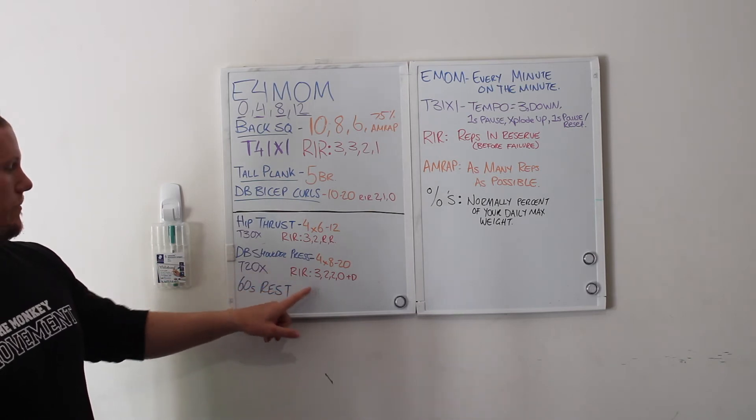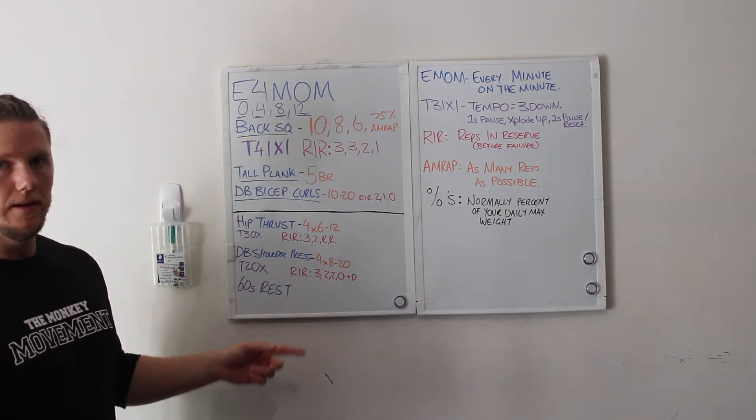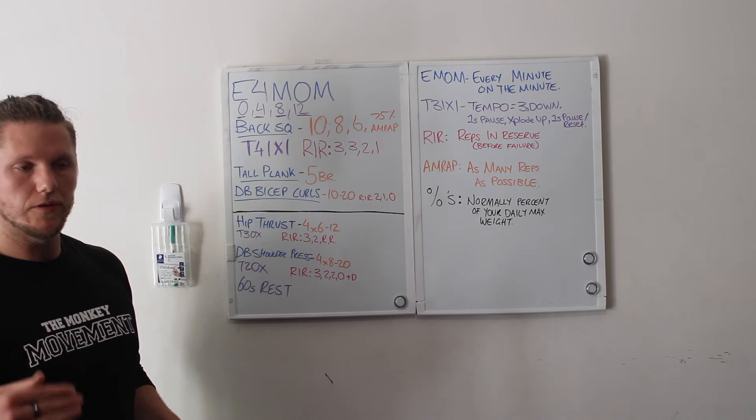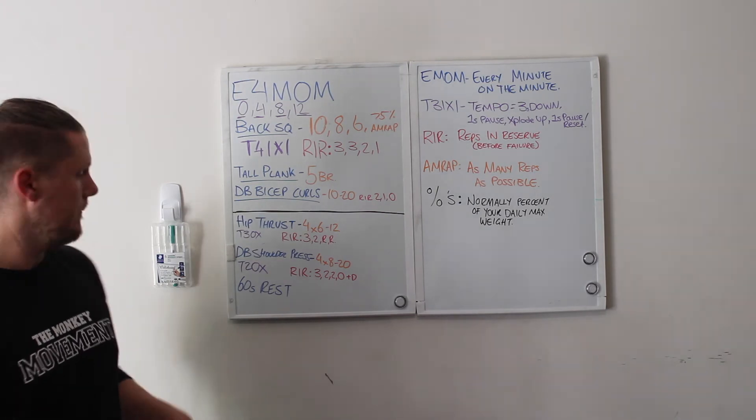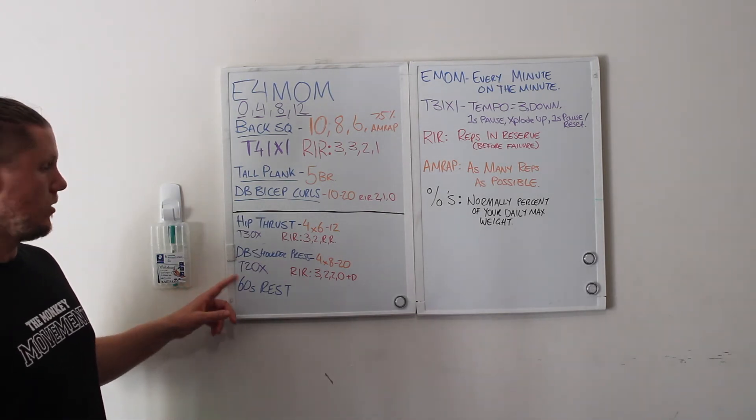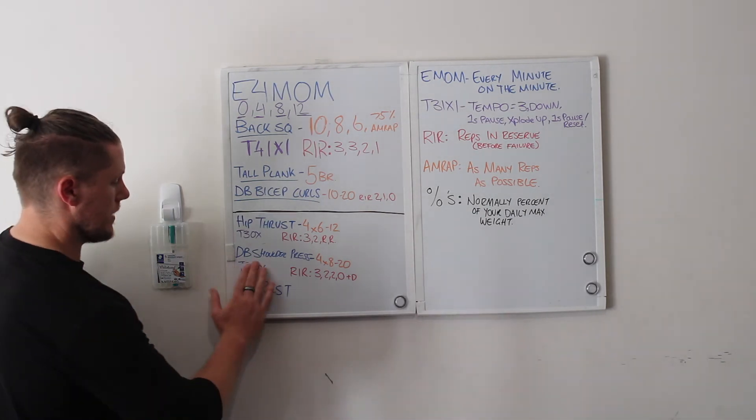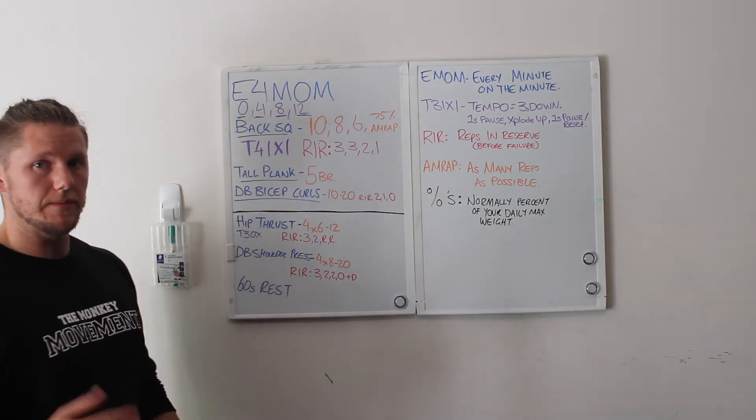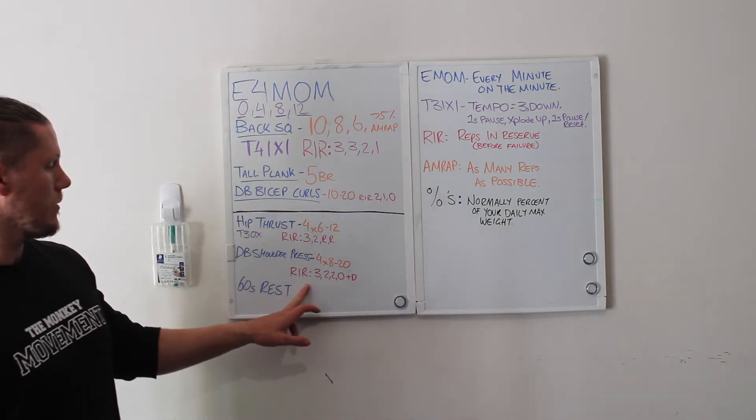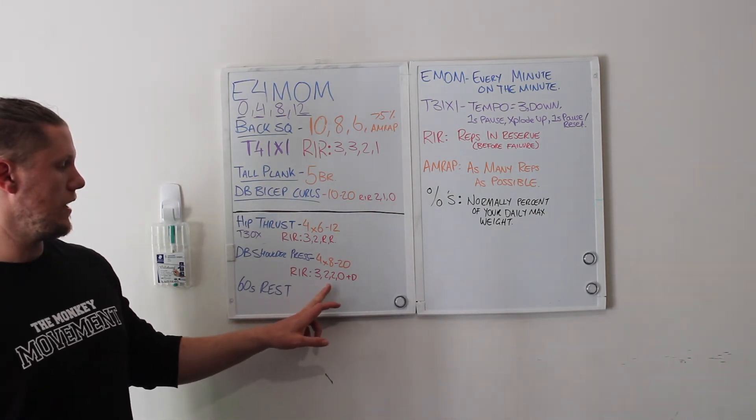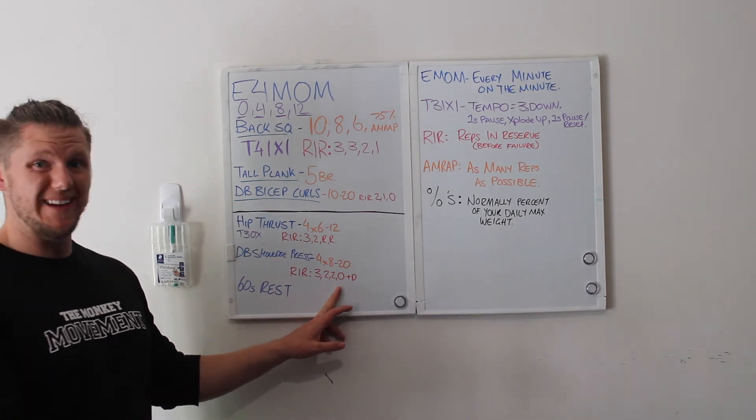Next, you do hip thrust, dumbbell shoulder press. Same deal, eight to twenty. Can't do eight, it's too heavy. If you're doing twenty, probably go up. T20X or sometimes when I'm not too concerned about the tempo, sometimes it won't even be there.